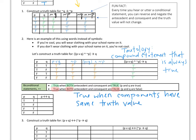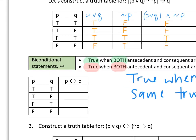Looking at the biconditional truth table: true if and only if true — since both are true, that's a true biconditional. True if and only if false — those don't match up, so that's false. False if and only if true — those don't match up, also false. And false if and only if false — since those are the same, we have a true statement.